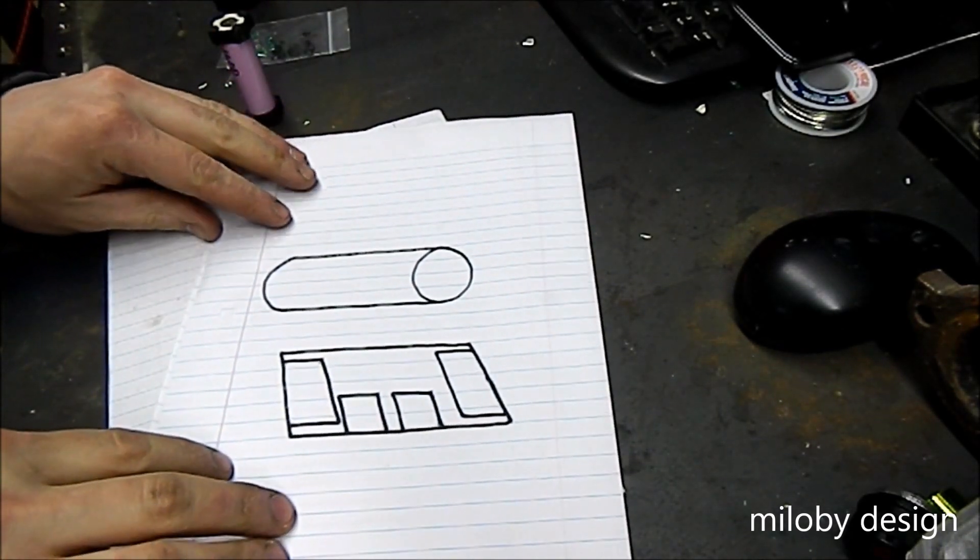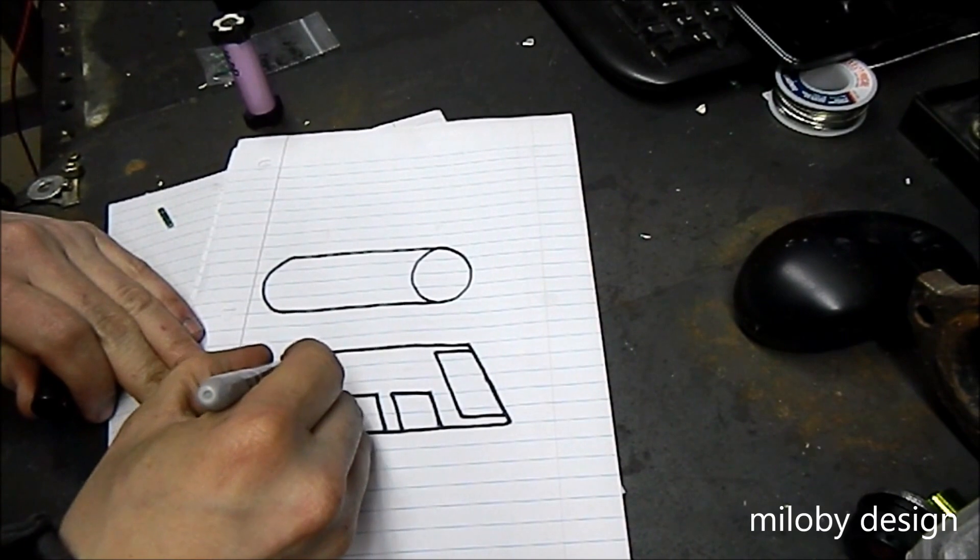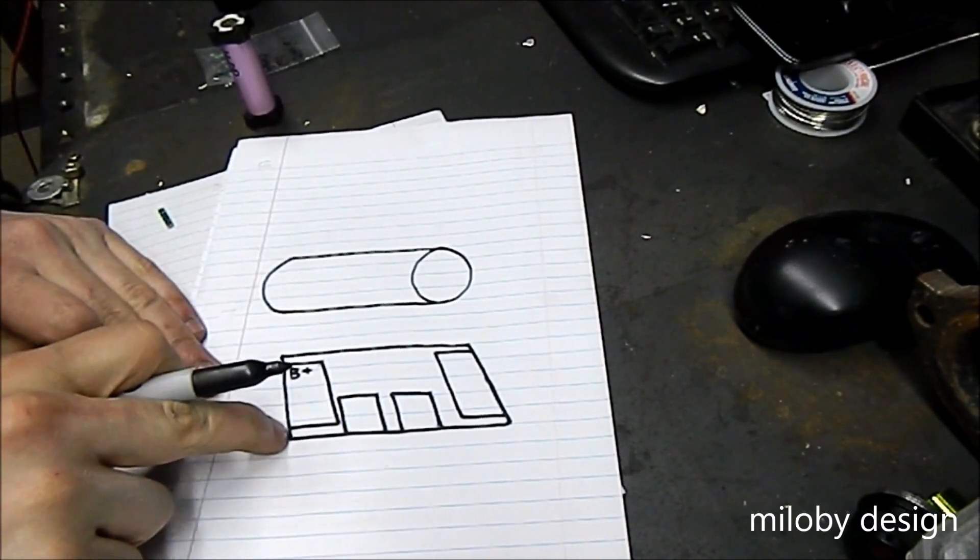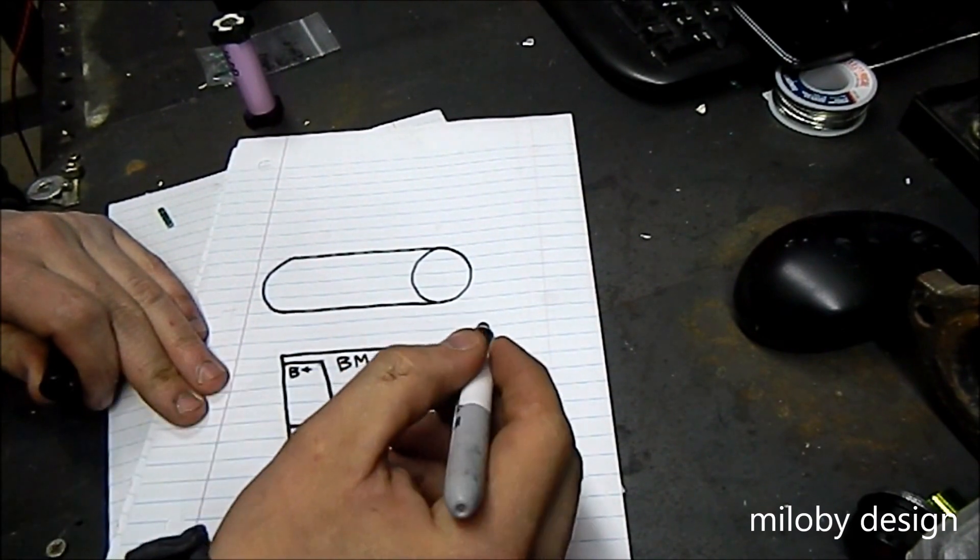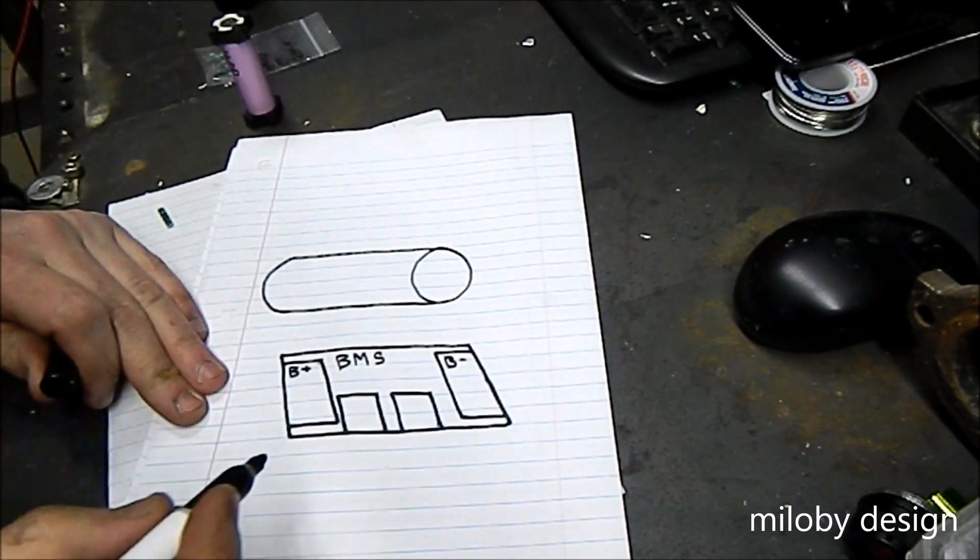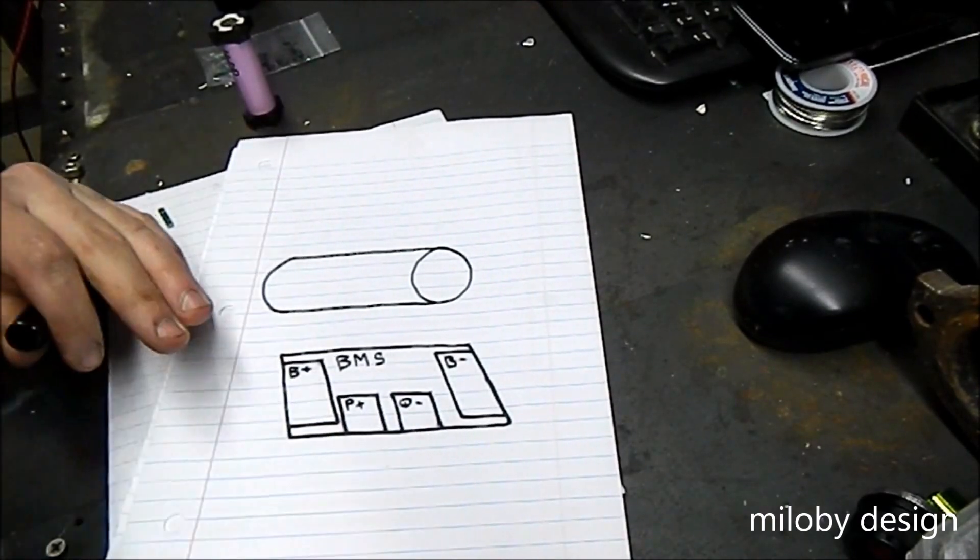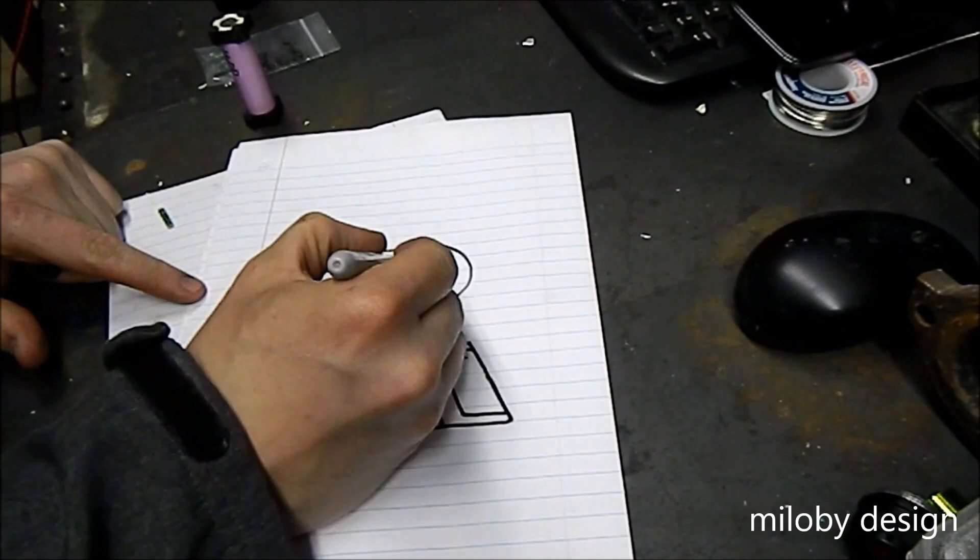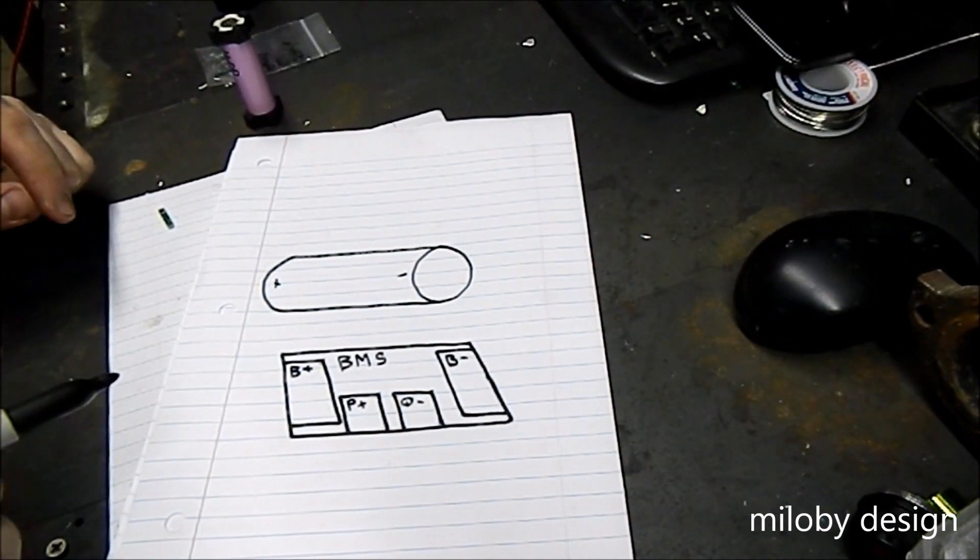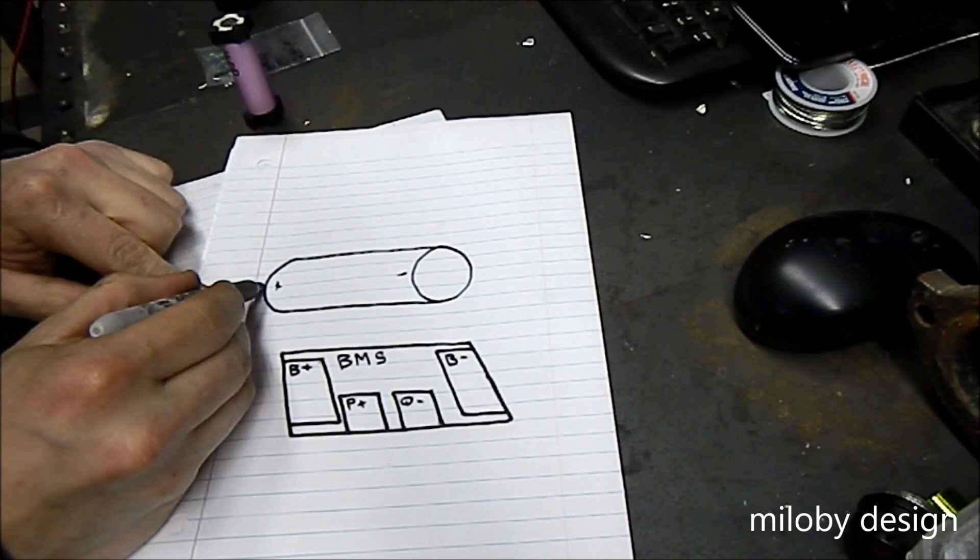I drew this out a little bit to try to make this easier to see. We have battery positive on the backside of the PCB of the BMS, and over here we have battery negative, P positive, and P negative. With our cell, I mean you have four options. It's pretty easy to figure out what goes where. I'm probably going to use nickel strips because they lay nice and flat and they'll look better rather than using some kind of wire.